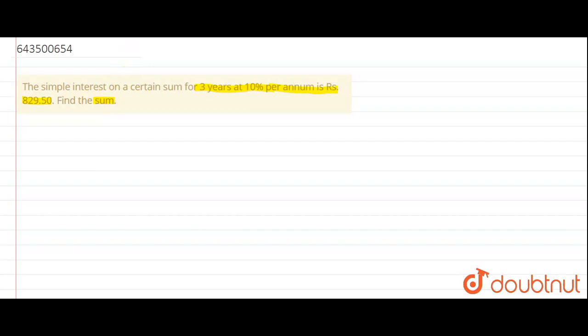Here, they are saying that simple interest is 82,950 on a certain sum for 3 years, so time is given. At 10% per annum means rate is given. So let's start with the solution.